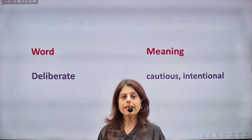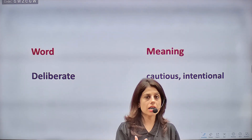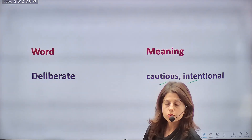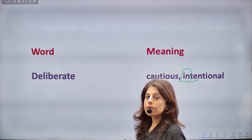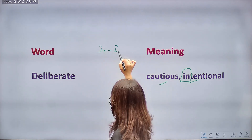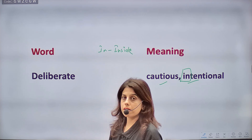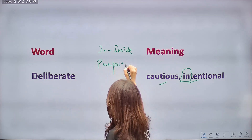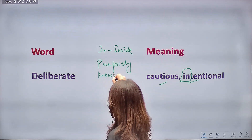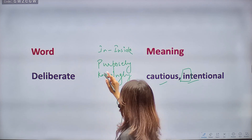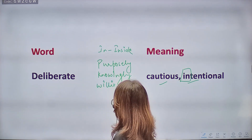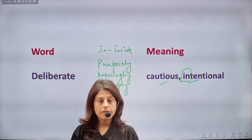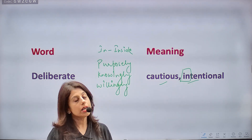Next word is DELIBERATE, meaning jaan mooch ki — intentionally. When you are not doing something unknowingly but purposely, with full consciousness and awareness. Root word 'in' means inside or under, so you already know what you are doing. Synonyms: purposely, knowingly, willingly, intentional, cautious.